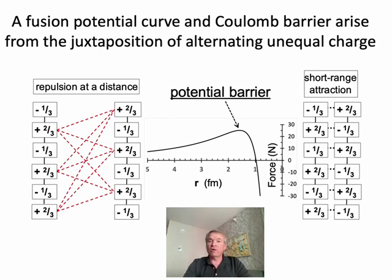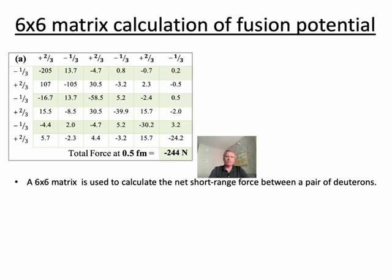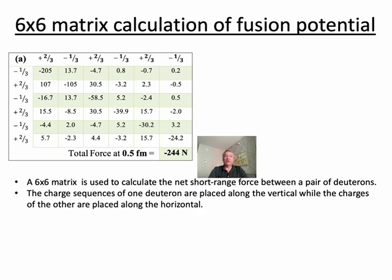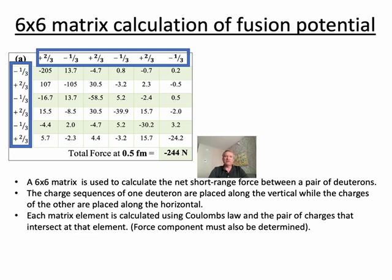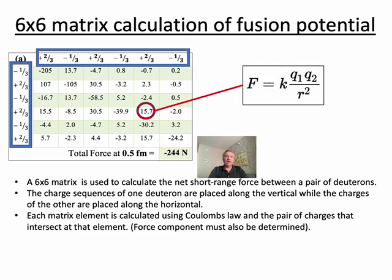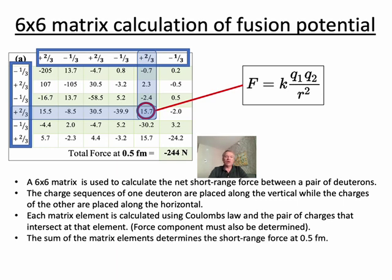We can verify this qualitative result quantitatively and generate a fusion potential curve. We can do this by setting up a six-by-six matrix calculation of the fusion potential. First, we align the vertical with the charges of one of the deuterons, and the horizontal with the charges of the second deuteron. Matrix elements are then determined using Coulomb's law and the charges that intersect at that particular element, as well as the distance between the charges.